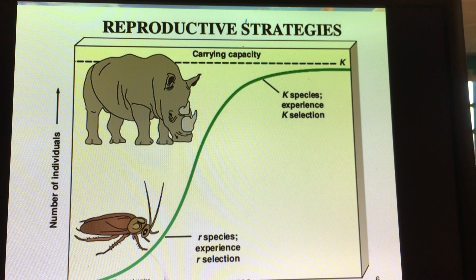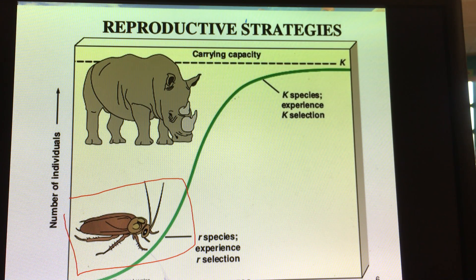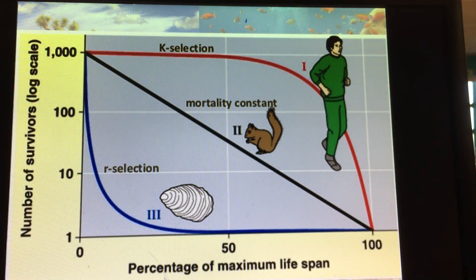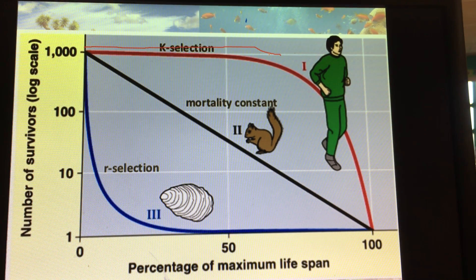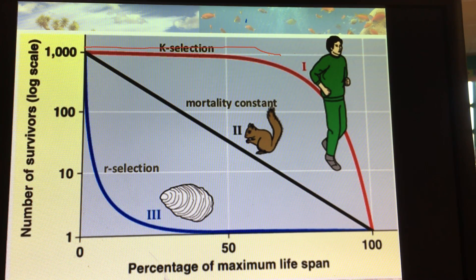K-selected species are found in more stable ecosystems, near carrying capacity, with low numbers of offspring because they invest in parental care so the offspring survive to adulthood. R-selected species, on the other hand, put a lot of energy and resources into making thousands of offspring with little to no parental care, with the hope that a few land in a suitable environment. Survivorship curves can therefore be read alongside K-selected and R-selected species strategies.